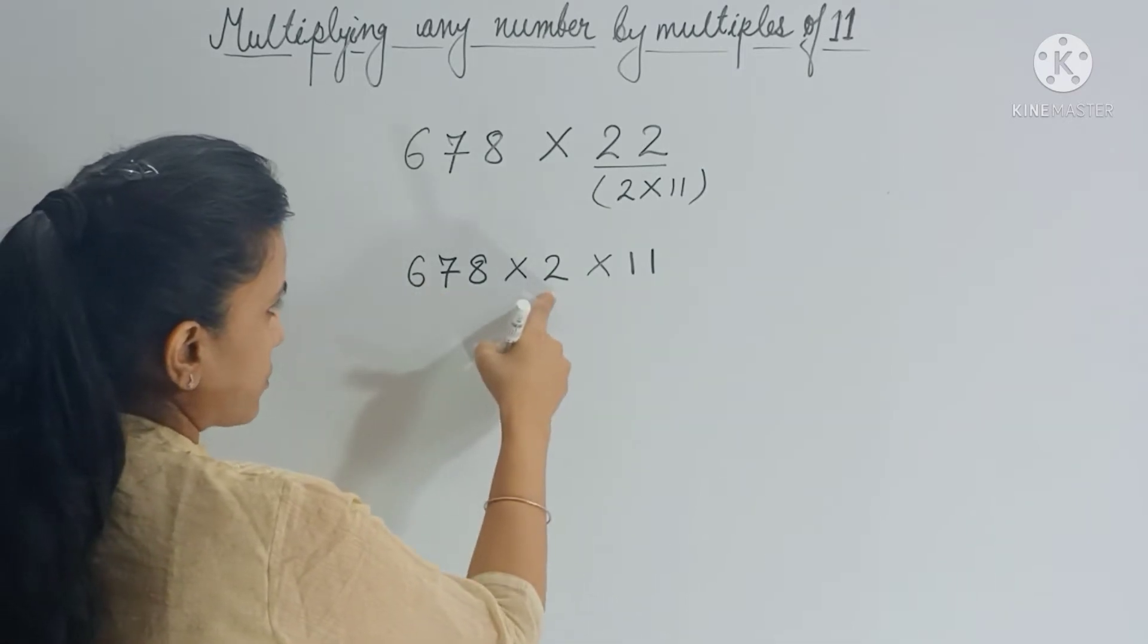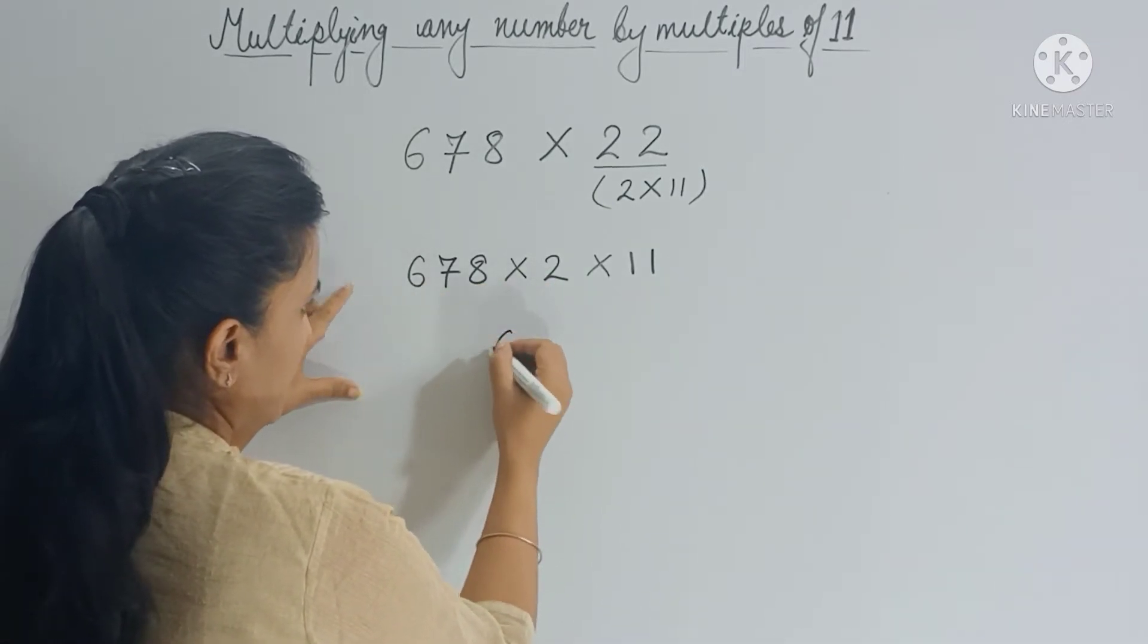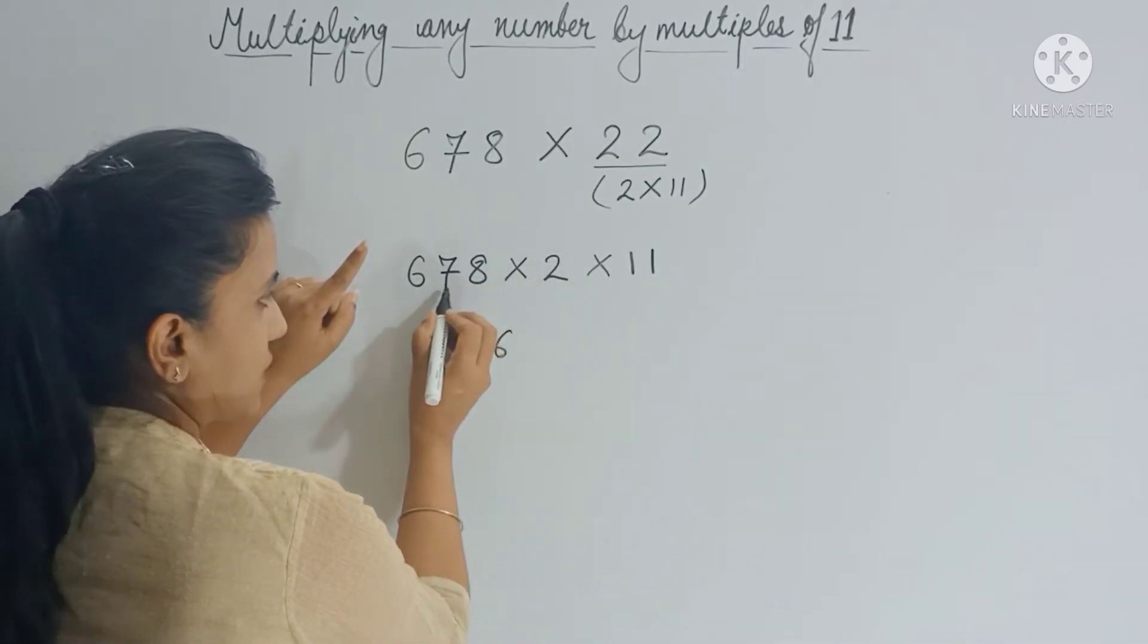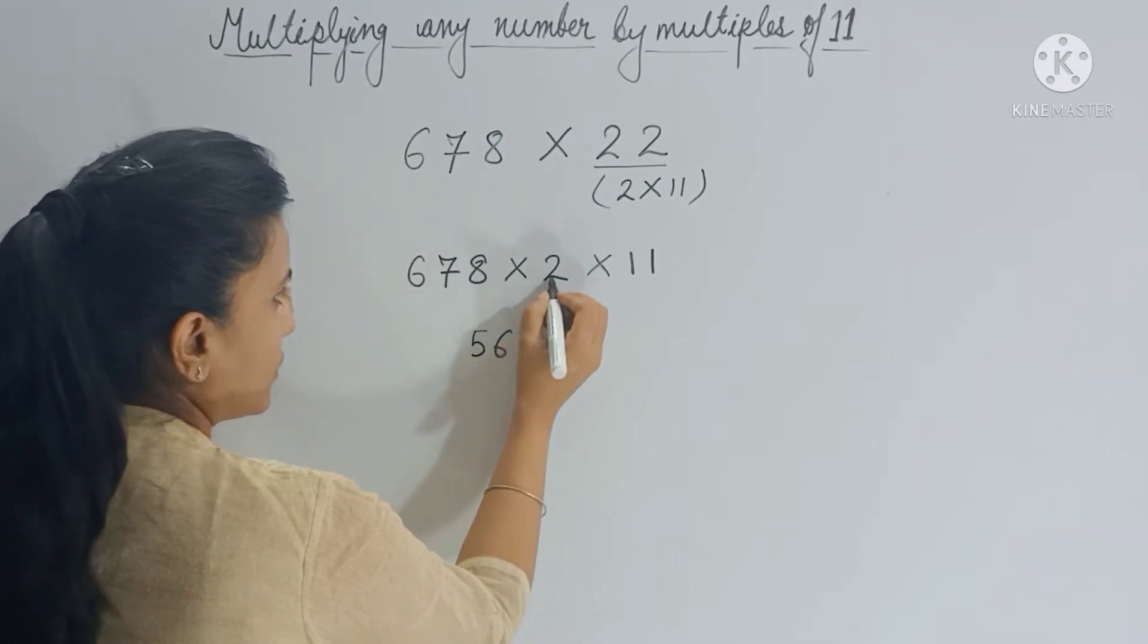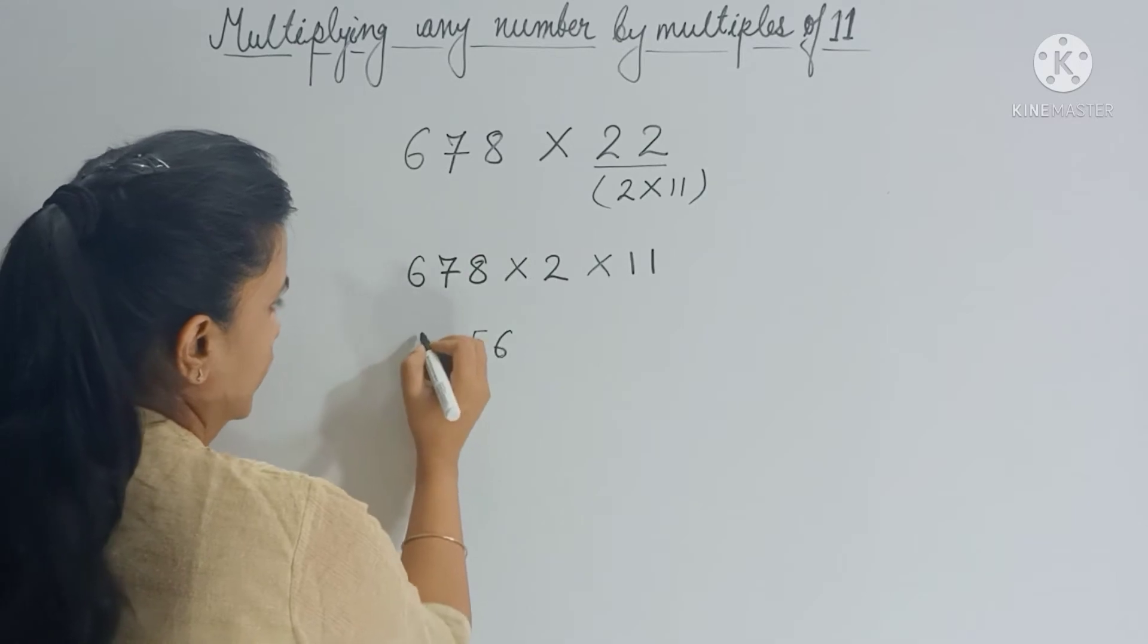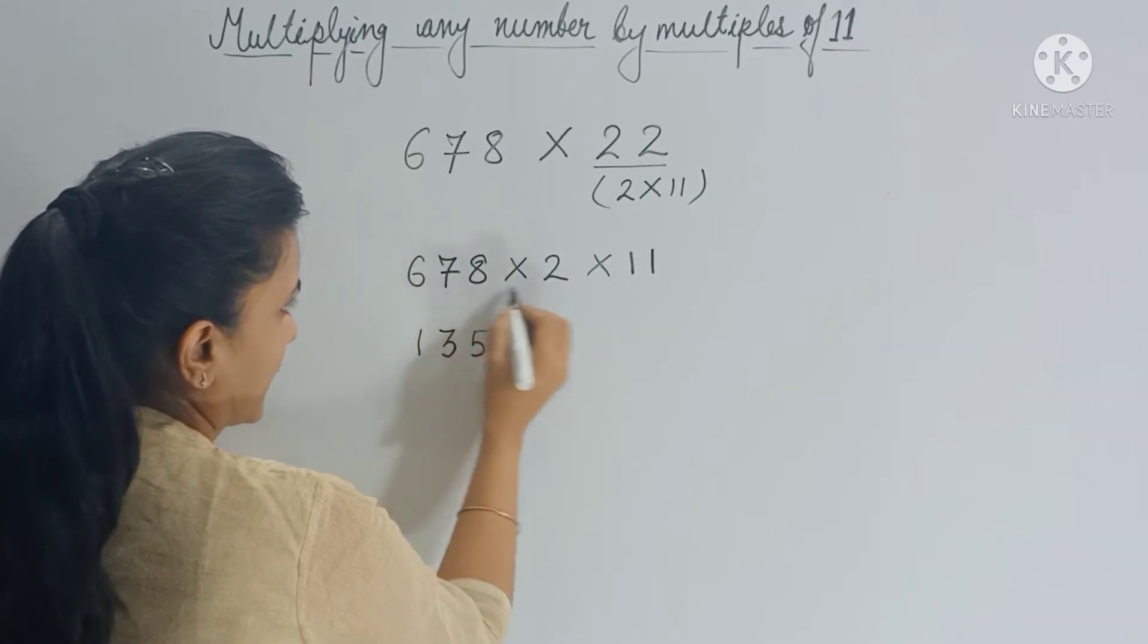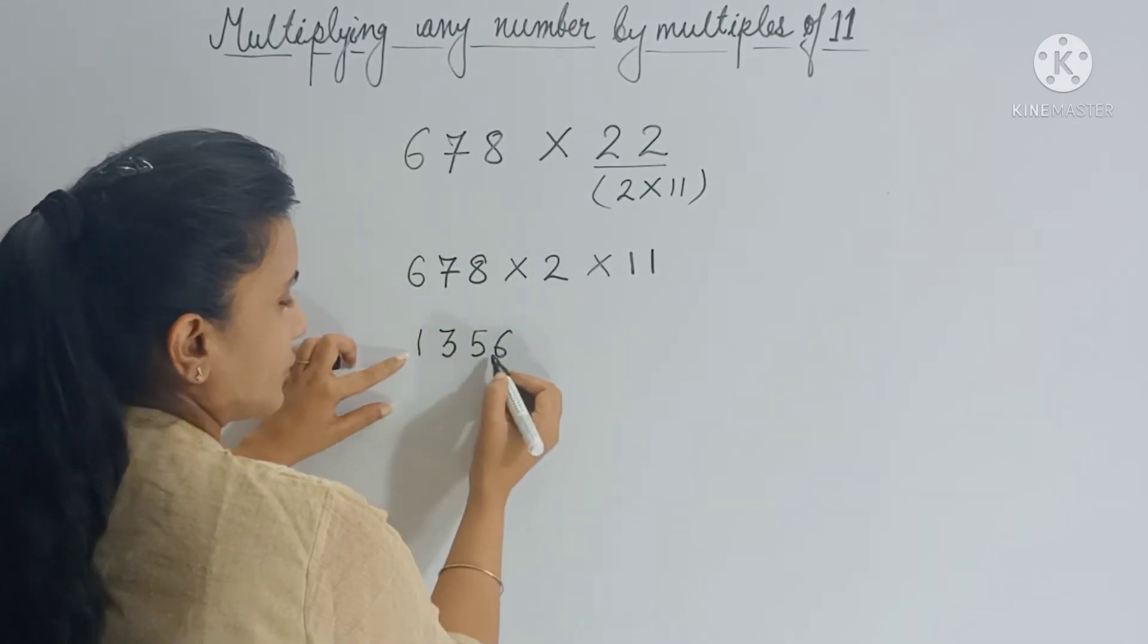So 2 times 8 is 16, 1 is your carry forward. 2 times 7 is 14, 14 plus 1 is 15. Again, 1 is the carry forward. 2 times 6 is 12 plus 1, which is 13. So after multiplying these two, you get 1356.